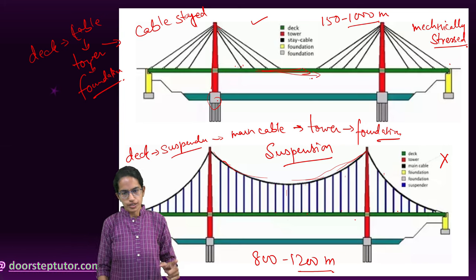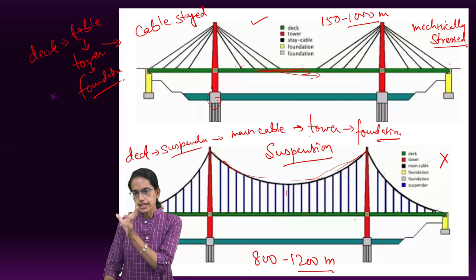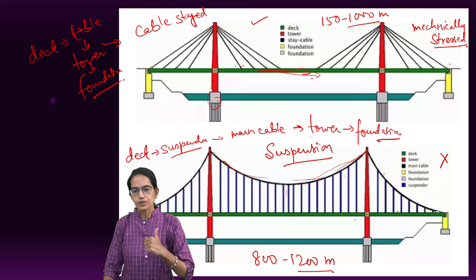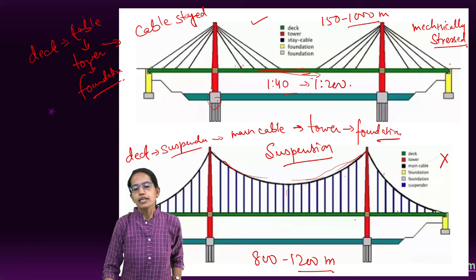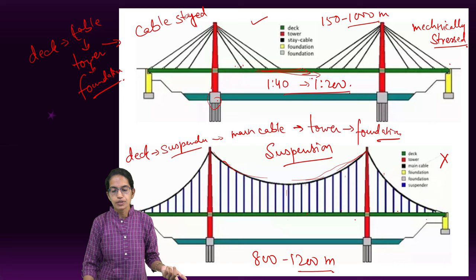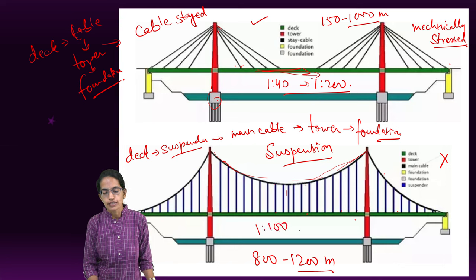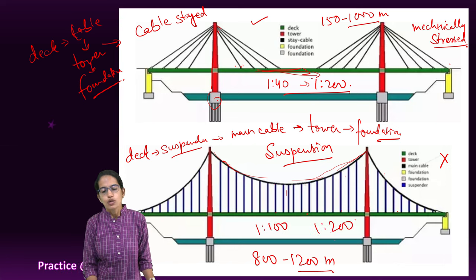Another important difference is the deck span to depth ratio. The deck span to depth ratio varies from 1 is to 40 to 1 is to 200 in the case of a cable-stayed bridge. In the case of the suspension bridge, it is 1 is to 100 to 1 is to 200.